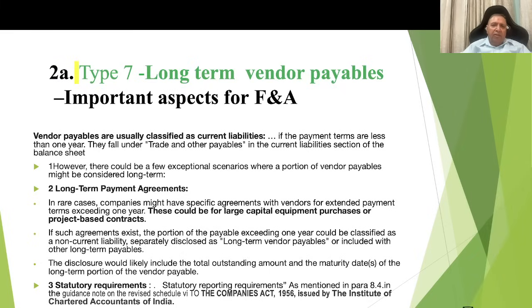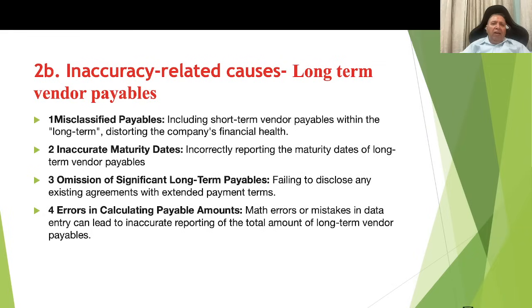Inaccuracy-related causes which can lead to incorrect financial reporting for long-term vendor payables are: number one, misclassified payables — including short-term vendors payable within the long-term, distorting the company's financials; number two, inaccurate maturity dates; number three, omission of significant long-term payables; and number four, errors in calculating the amounts payable, which could be mathematical or computation errors.